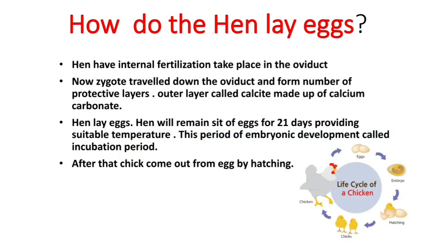The first question is: how do hens lay eggs? You already know eggs are a common breakfast item. The hen has internal fertilization that takes place inside the hen's body — inside the oviduct of the hen. After fertilization, a zygote is formed, and this zygote travels down the oviduct of the hen. The hen has external development.